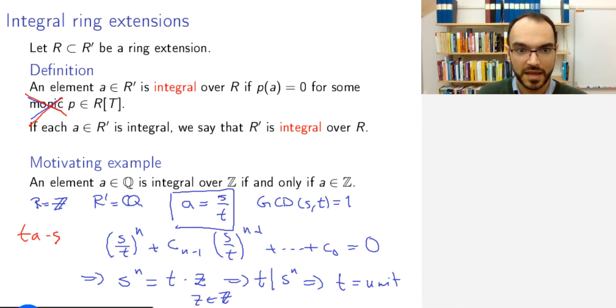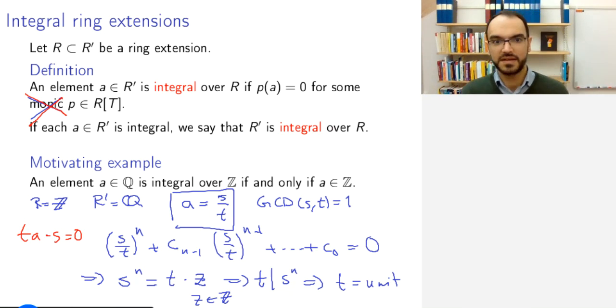But the point is here, there is a difference taking a monic polynomial or not, because this t is in general not invertible. And what concerns finiteness, if we do this, then all rational numbers will be in this alternative definition integral over the integers, and so then we will lose this property that being integral somehow implies some finiteness when adjoining that element.